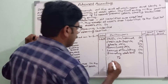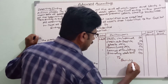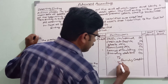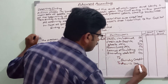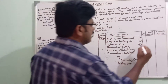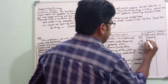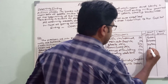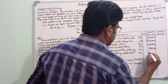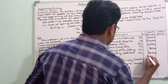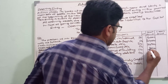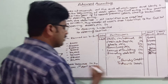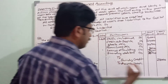Then on the credit side: sundry creditors credited, bank loan credited. Then write the amounts — debit amounts: 6,000; 24,000; 25,000; 8,000; 70,000; 35,000. Credit amounts: sundry creditors 28,000, bank loan 20,000.